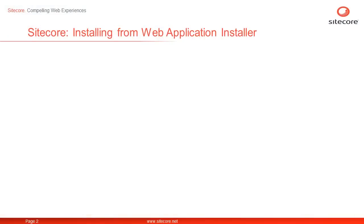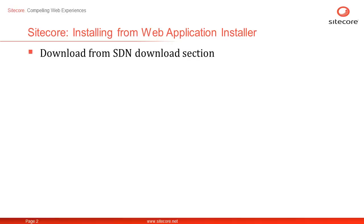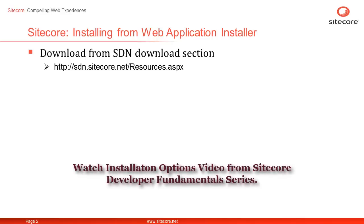We will install Sitecore using the Sitecore Web Application Installer. The Web Application Installer is available at SDN in the Download section. You can reach the Download section at http://sdn.sitecore.net/resources.aspx. You may watch the Installation Options video from Sitecore Developer Fundamental Series to learn how to download the Web Application Installer.